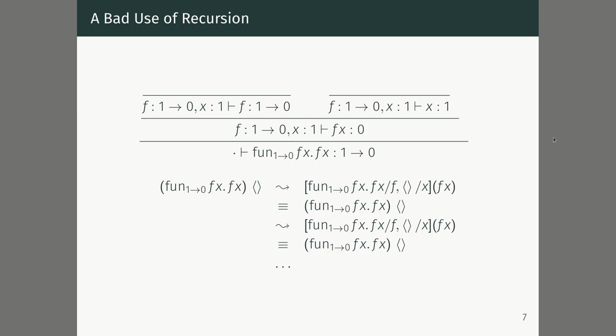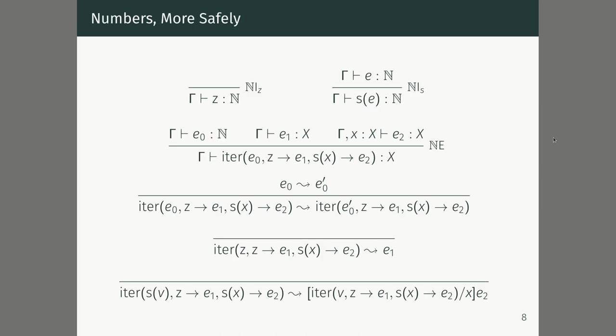We have a bad use of recursion. It would be nice if we could write loops and still have the guarantee that every program terminates. What we can do is move to another logical system invented in the late 1930s or early 1940s by Kurt Gödel — of the incompleteness theorem fame. He invented a system called Gödel's T, which is basically the lambda calculus augmented with numbers in a way that retains the termination property.